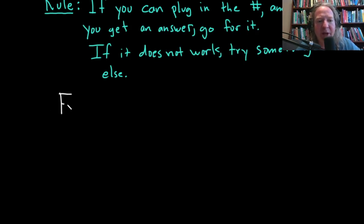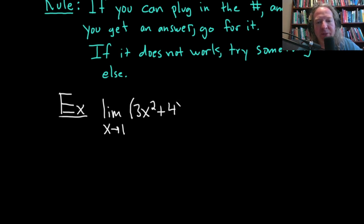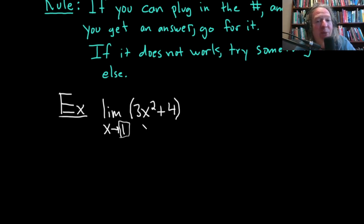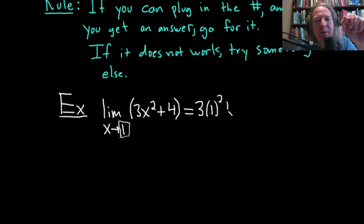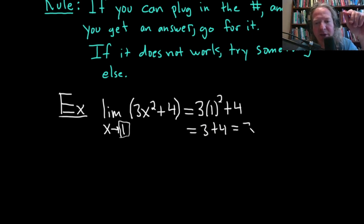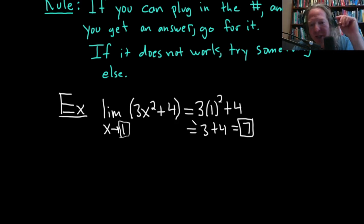Let's start with an example. Say we have the limit as x approaches 1 of (3x² + 4). Our rule says if we can plug in the number — in this case the 1 — into this polynomial and get an answer, go for it. When you plug in the number you drop the limit sign. We get 3 times 1 squared plus 4, which is 3 plus 4, equal to 7. Super easy — we're doing calculus!